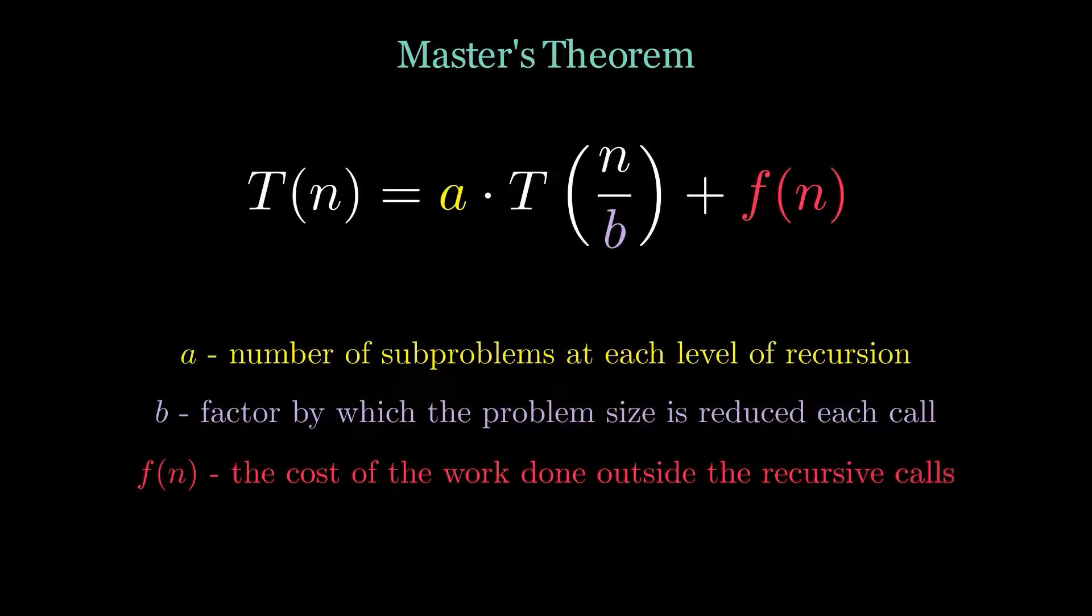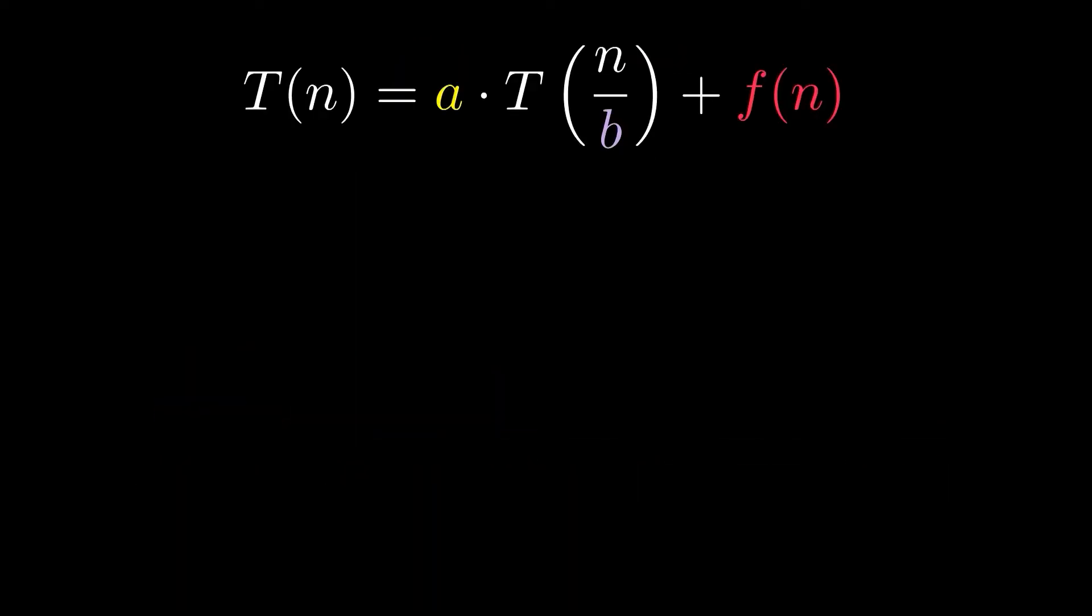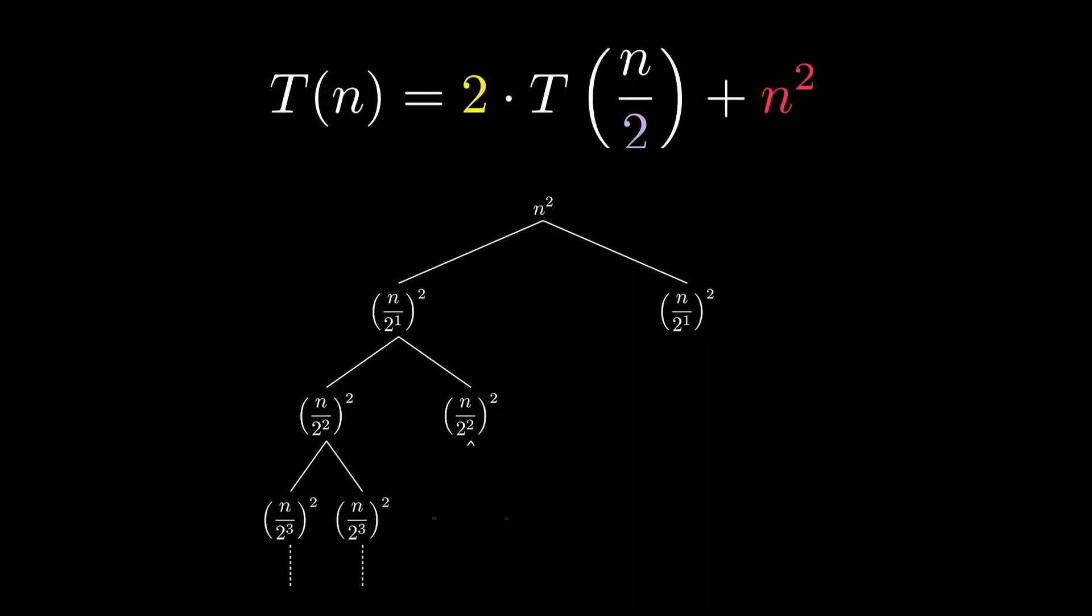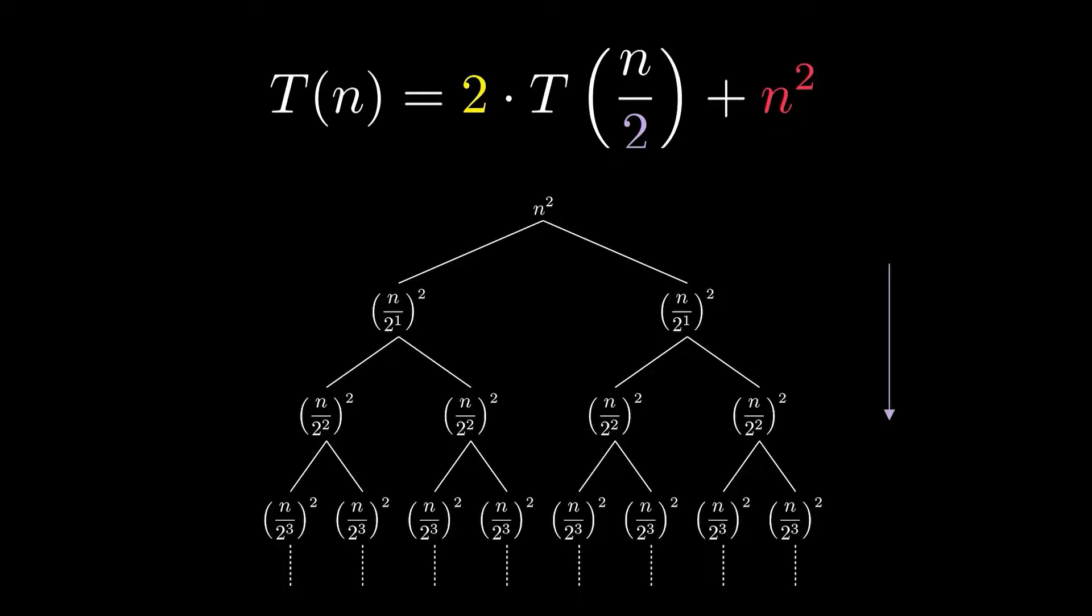The function f(n) represents the cost of the work done outside of the recursive calls. Let's consider a case where a is 2 and b is also 2, and the function f(n) is n-square. So a being 2 basically says that the problem is being subdivided into two further subproblems, which is represented by the child nodes in this tree. And b being 2 means that at each level, the complexity of the function gets reduced to half.